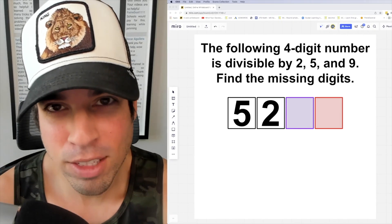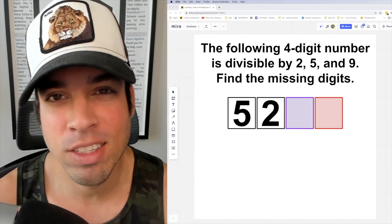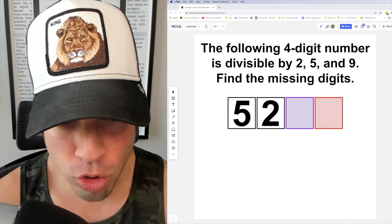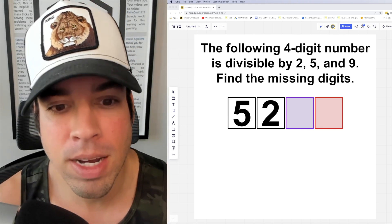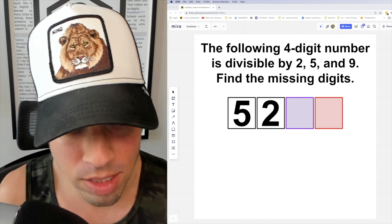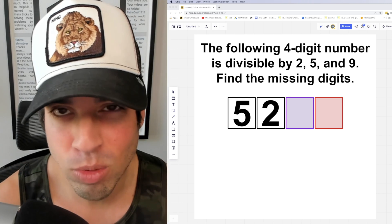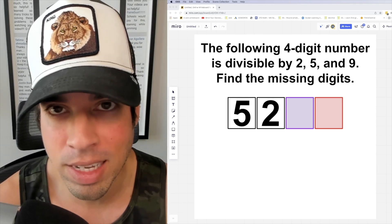What's up everybody and welcome back to another math puzzle. In this one, the question is as follows: the following four-digit number is divisible by 2, 5, and 9. Find the missing digits. So again, we know this is 5,200 and something. We got to find those last two digits in the tens and ones place.